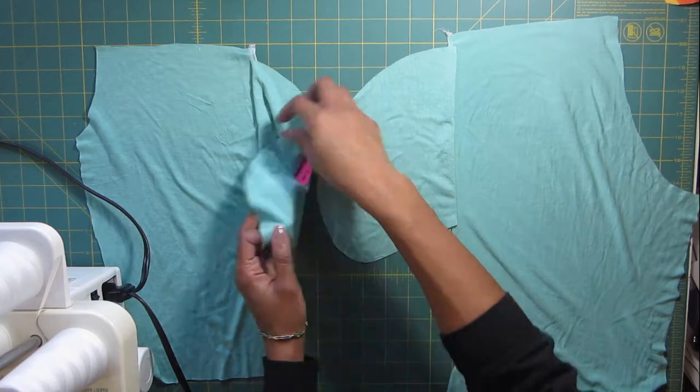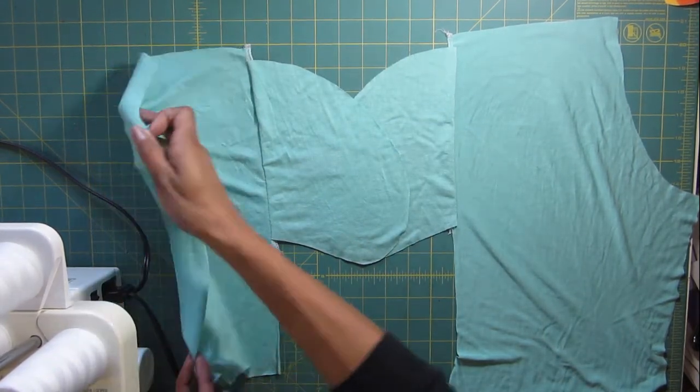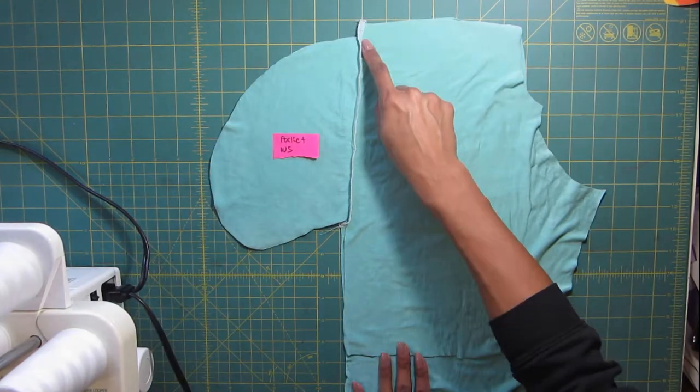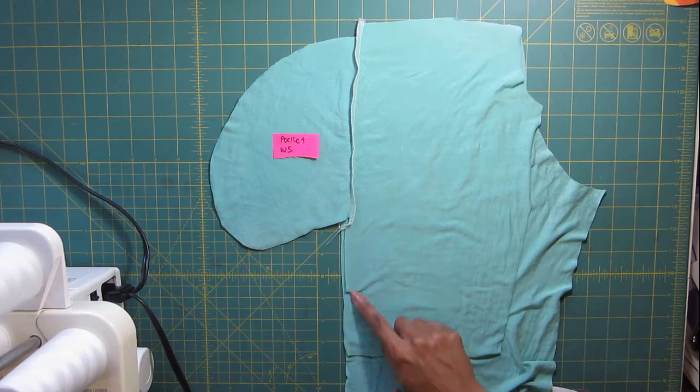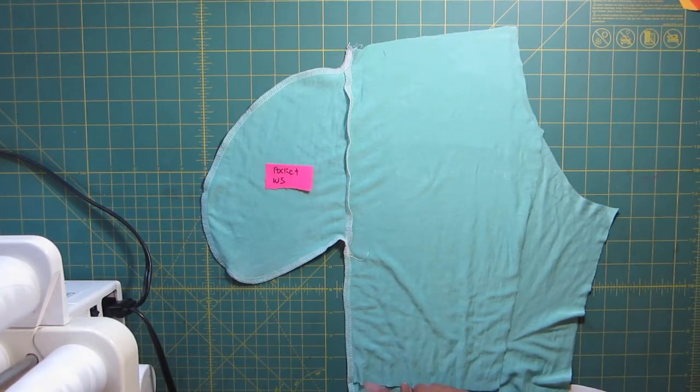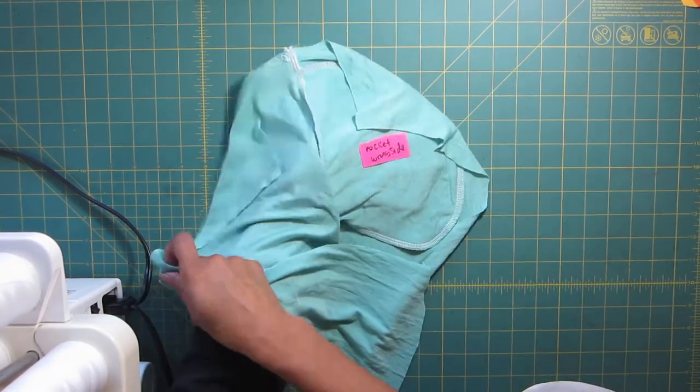Flip them together right sides together, then sew down the side seam and around the pocket and down the side seam of the leg. That's for the front and back leg. When you're done and you put your legs together, you have your finished pocket.